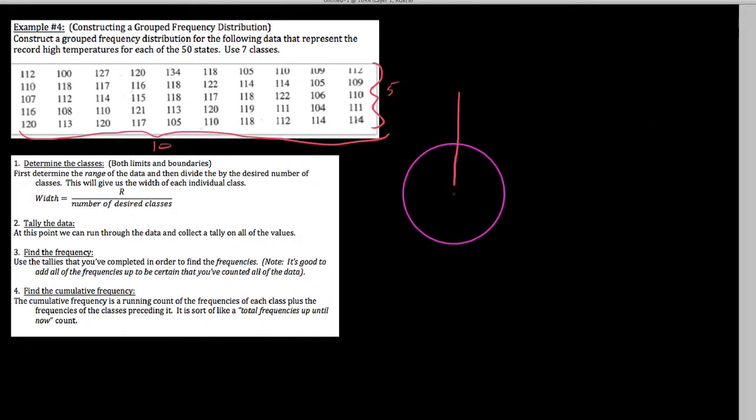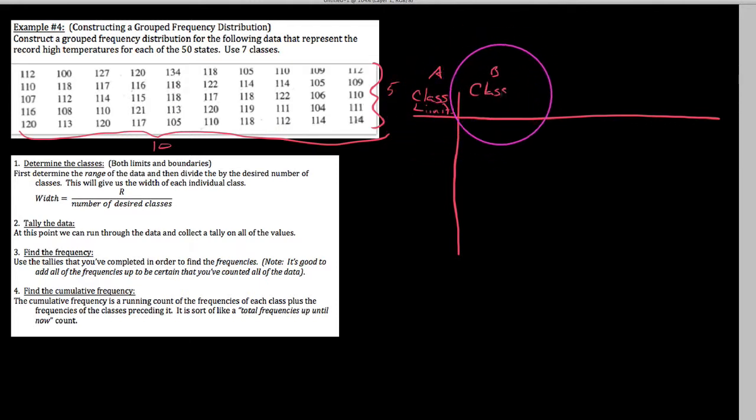Recall that a frequency distribution, the very first things that we list here in column A are class limits. And then column B here is our class boundaries. Class limits and class boundaries are heavily related to one another, but we're going to have to develop our class limits before we do anything. So if that's our first step, let's talk about what our ambition is to do here.